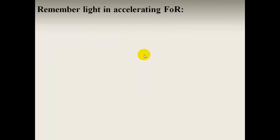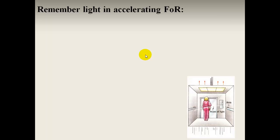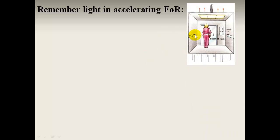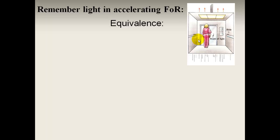Let's go back to what happens to light in an accelerating frame of reference. Remember the woman in the lift — the light comes in and, as the lift accelerates, with every moment of time the light gets further and further displaced, so it basically curves down. Due to the equivalence principle, a frame of reference in a gravitational field and an accelerating frame of reference are equivalent, so the same thing observed in an accelerating frame will also be observed in a gravitational field.